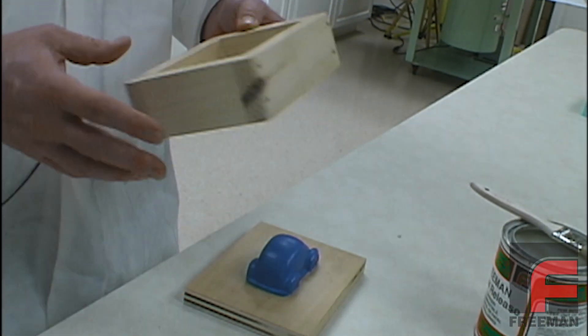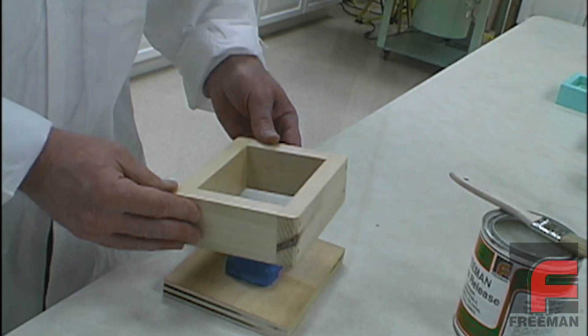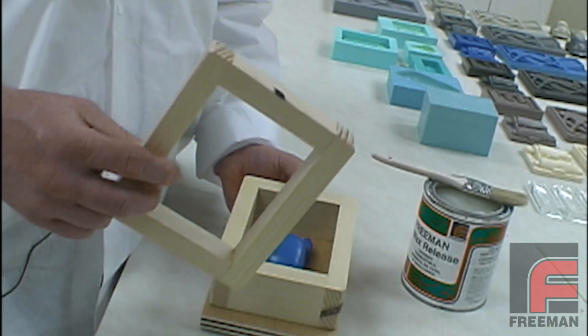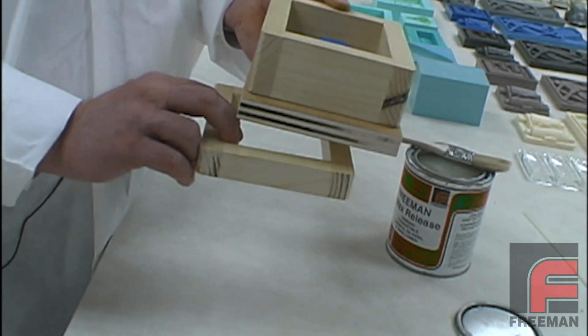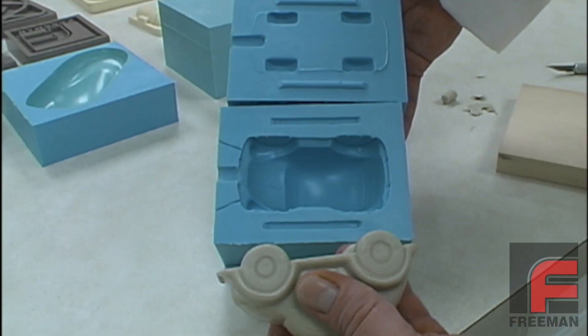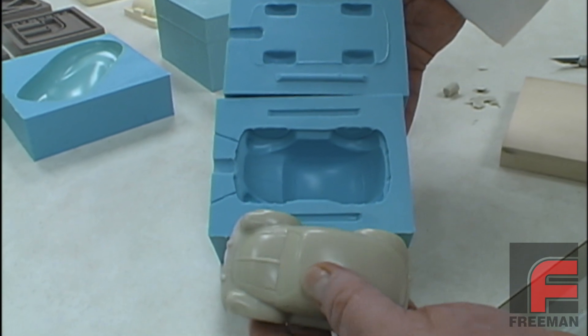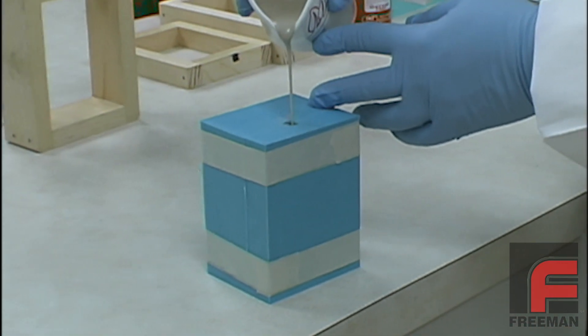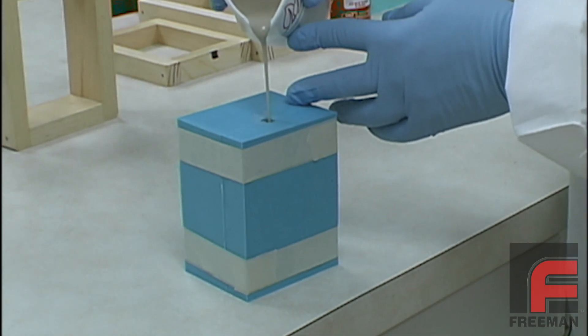To contain the poured material, we have constructed a two-part wooden frame. The first half is deep enough to cover the majority of the model, and the second half is deep enough to cover the wheels. Now, we need a mechanism for the two halves of the model to interlock. Additionally, we need to create a path to pour the material into the mold, called a gate.